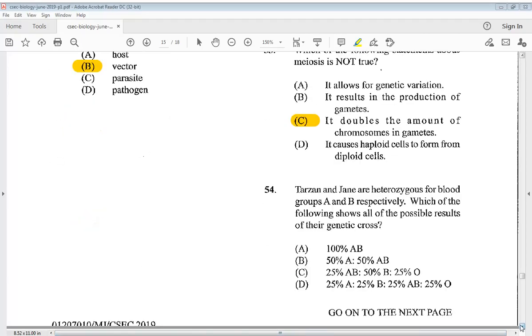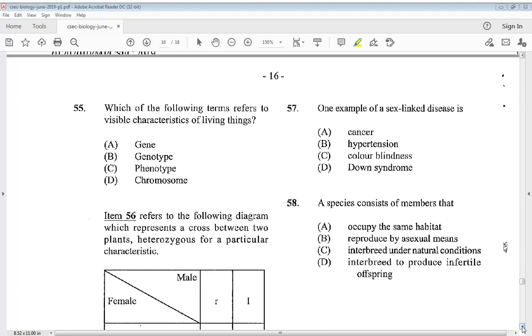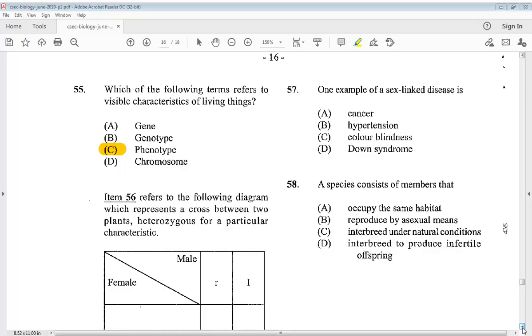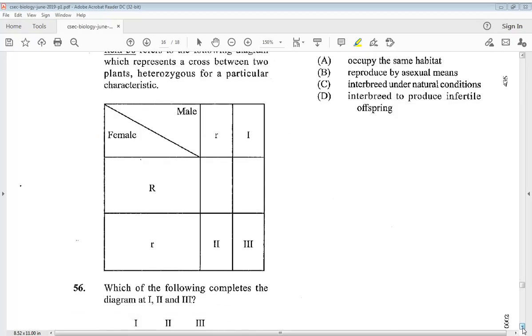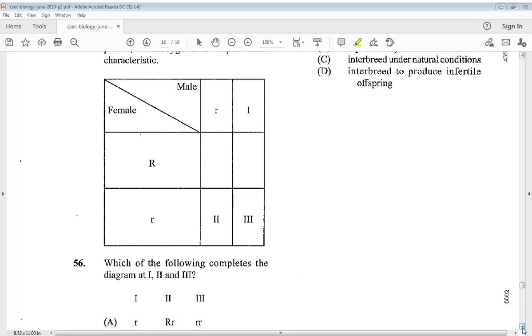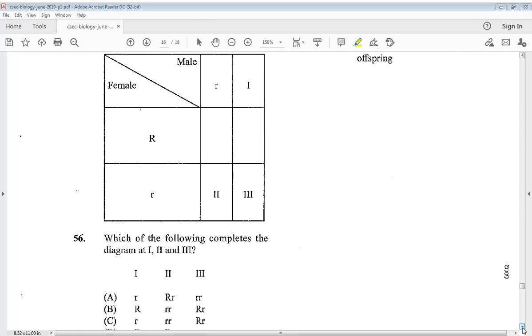Let's go to number 54. Tarzan and Jane are heterozygous for blood groups A and B respectively. Which of the following shows all of the possible results of their genetic cross? So we know the answer is D: 25% A, 25% B, 25% AB, 25% O. Question 55: Which of the following terms refers to visible characteristics of living things? A gene, B genotype, C phenotype, D chromosome. So we know the answer is C, phenotype. Item 56 refers to the following diagram which represents a cross between two plants heterozygous for a particular characteristic. Which of the following completes the diagram at one, two, three? So the answer is B.